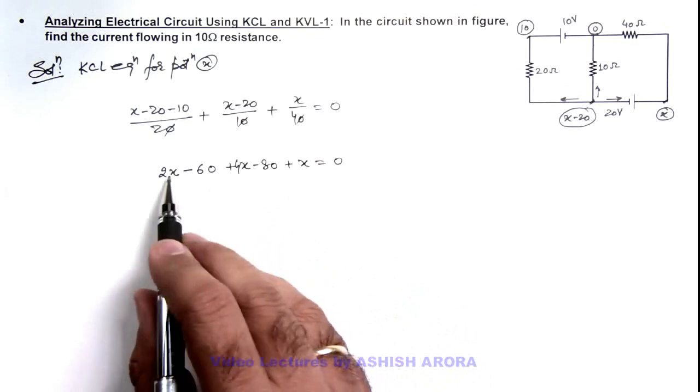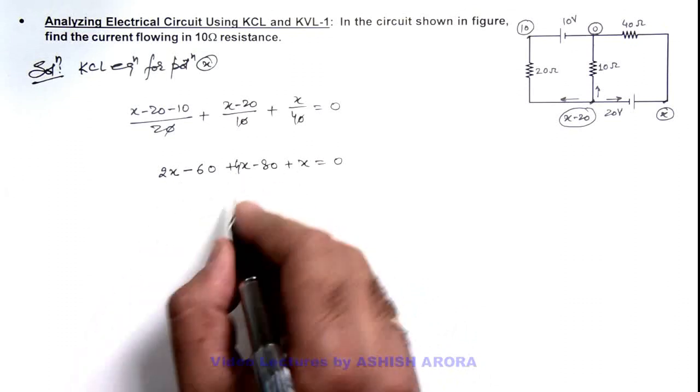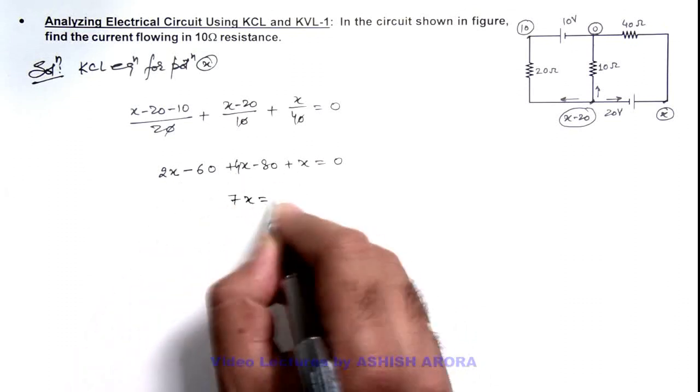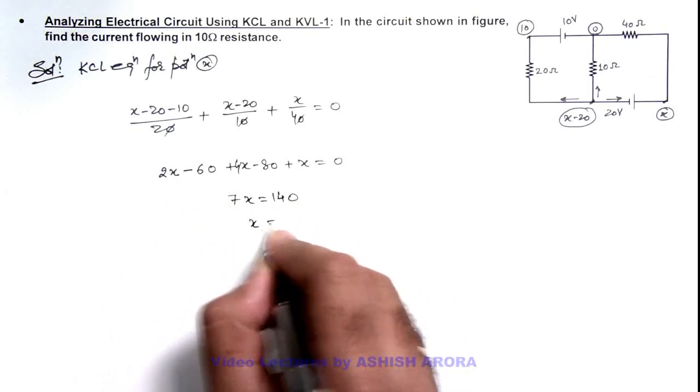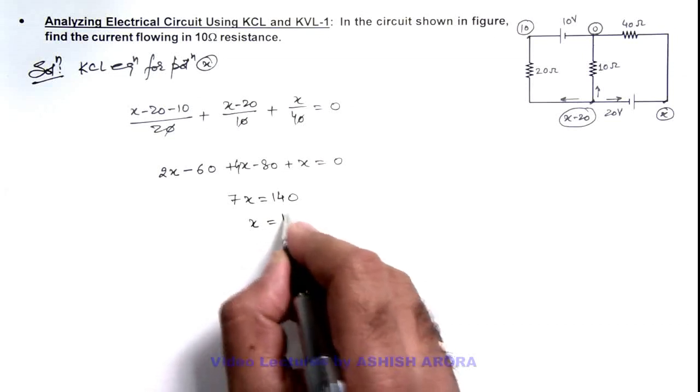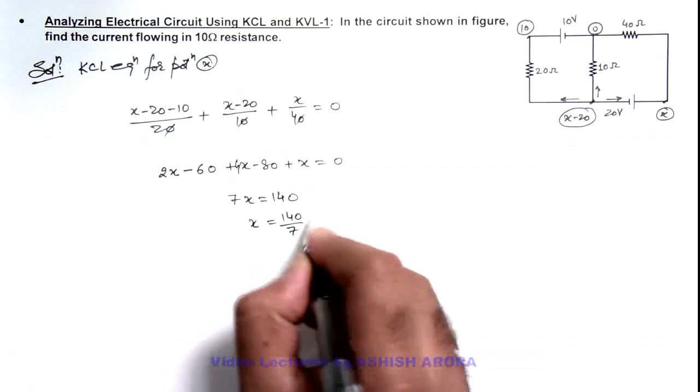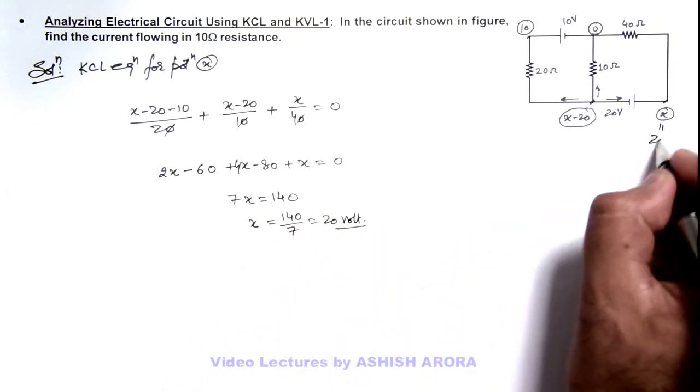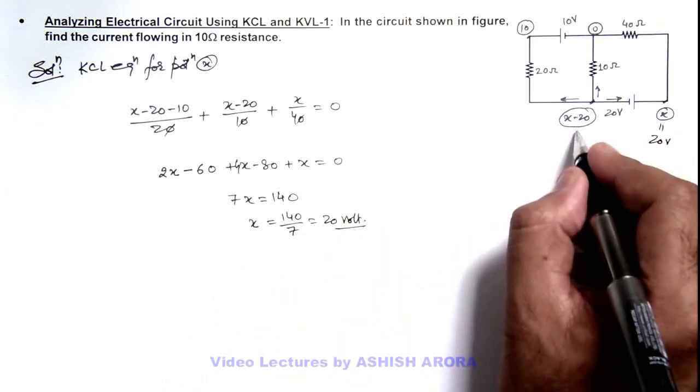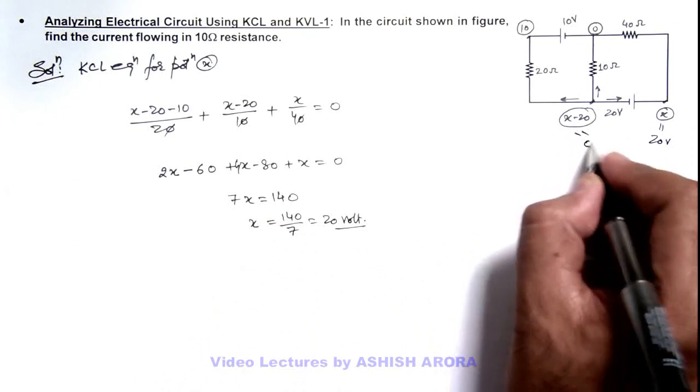So further simplifying it is 4 plus 2, 6 plus 1, 7, 1x. So the value of x we are getting here is equal to 140 by 7, that will be 20 volt. So the value of x we are getting is 20 volt, so potential at this junction will be equal to zero volt.